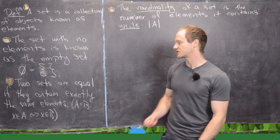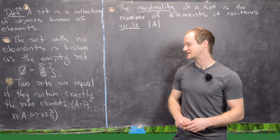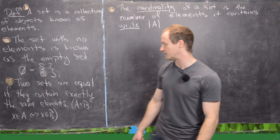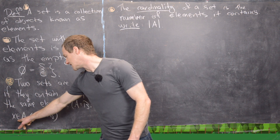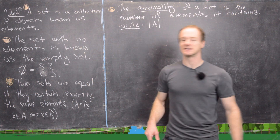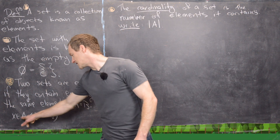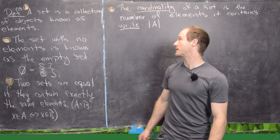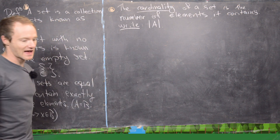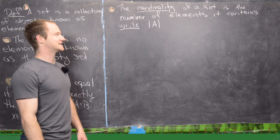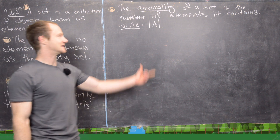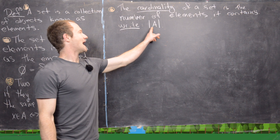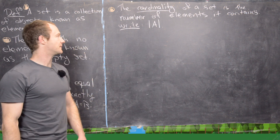Two sets are said to be equal if they contain exactly the same elements. In logical terms, A equals B if x is in A if and only if x is in B — so if x is in A it must be in B, and if x is in B it must be in A. Finally, the cardinality of a set is the number of elements it contains; we'll denote it with absolute value lines around the set name.